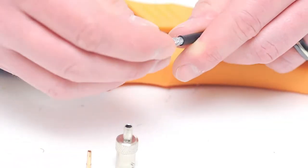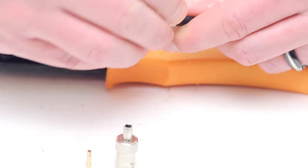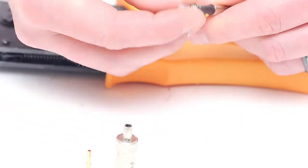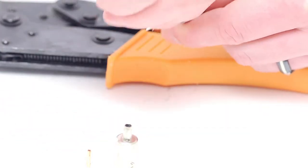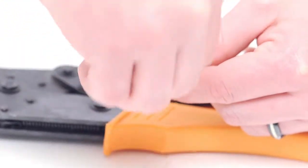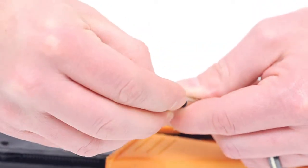Take the ferrule and slide it onto the cable. Using your hands, fold back the braided shield on top of the jacket and slide the ferrule over the braid and the jacket.